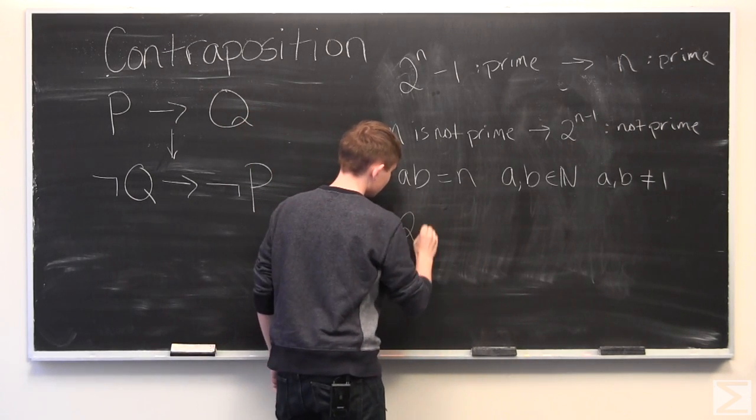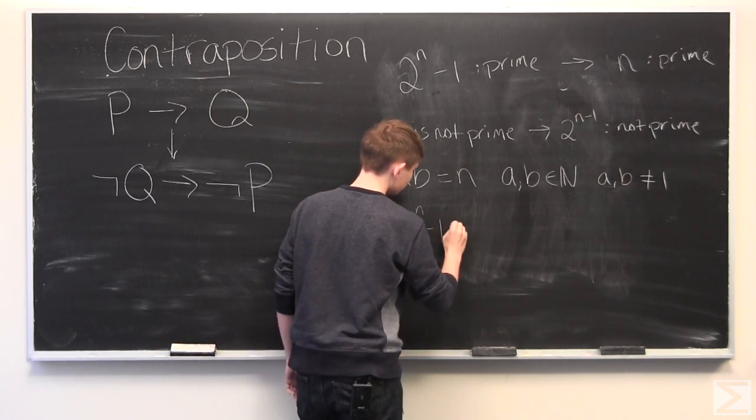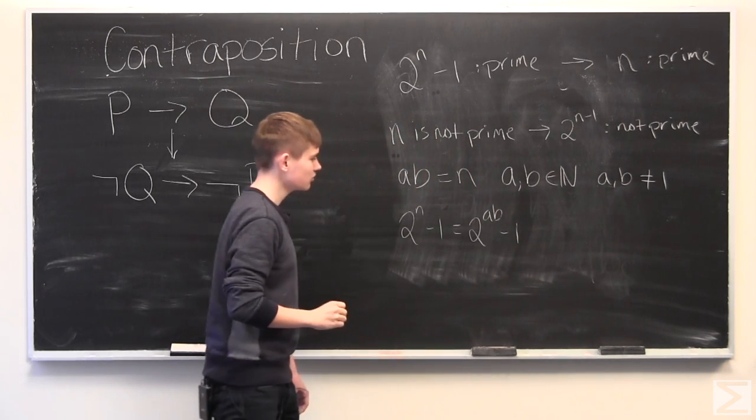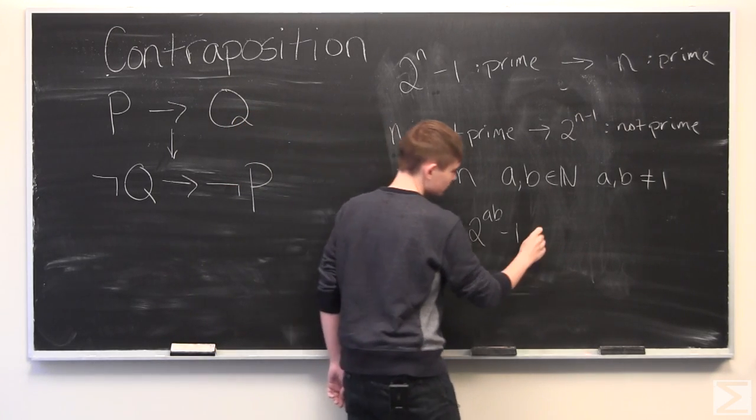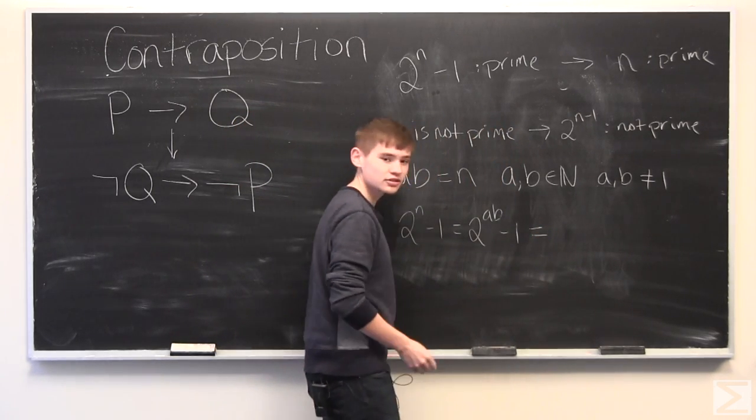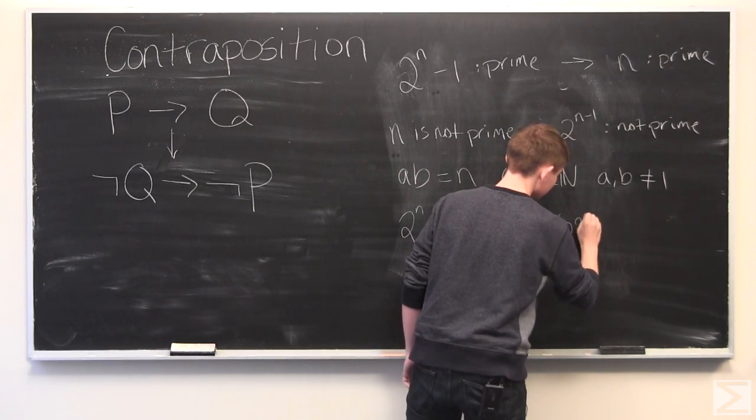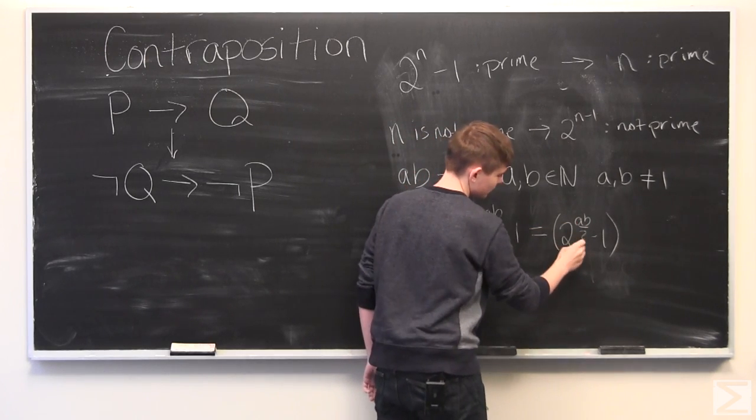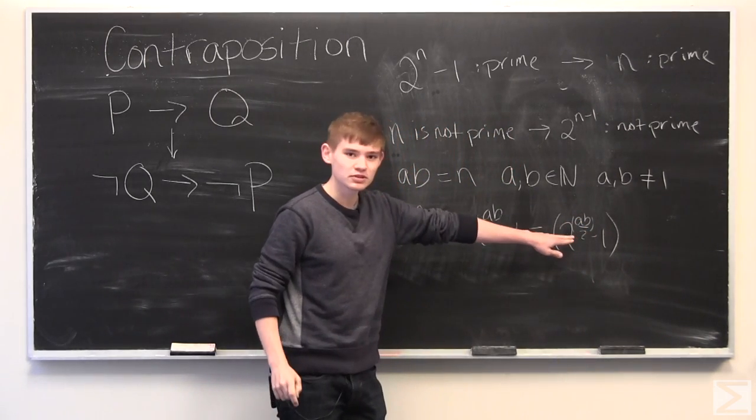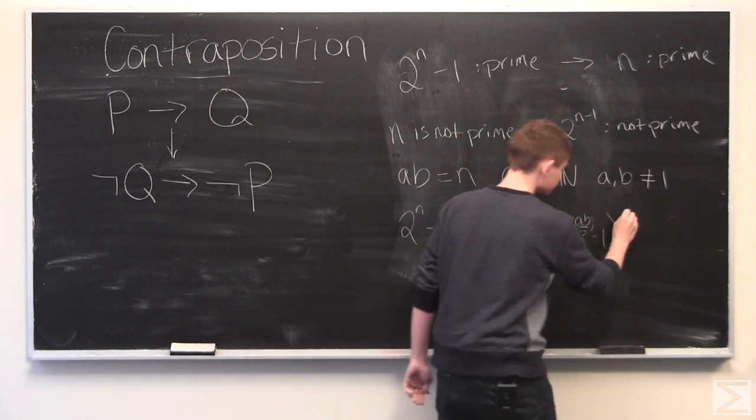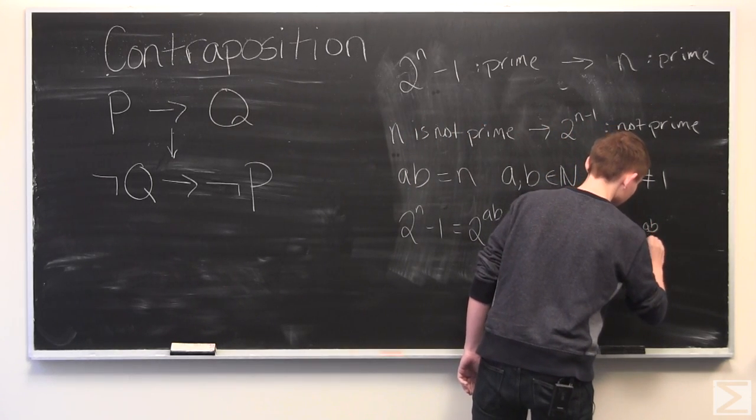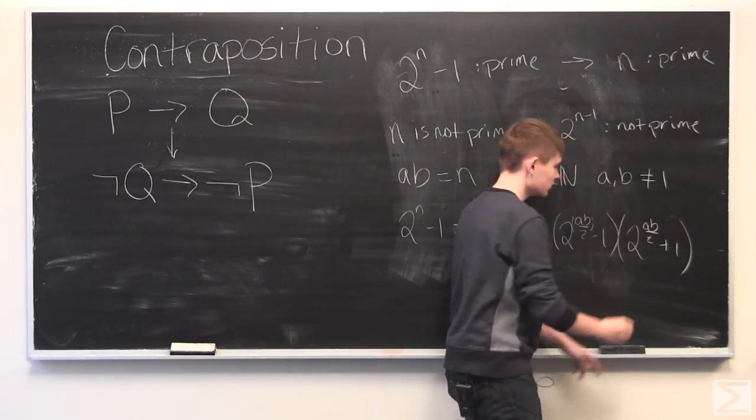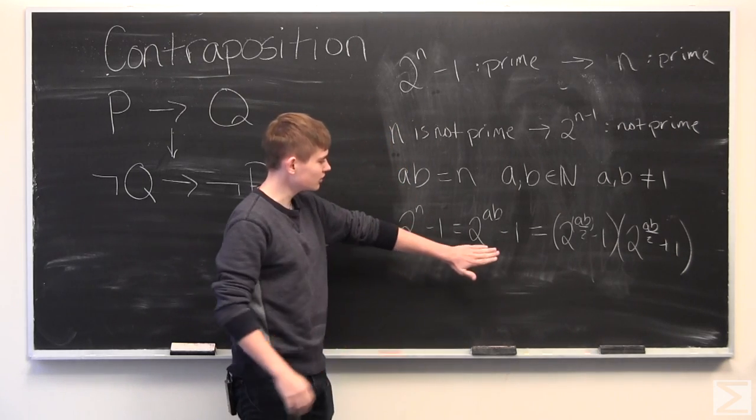So this means that 2 to the n minus 1 is equal to 2 to the A times B minus 1. And, if we have this, we can factor it into 2 to the A times B divided by 2 minus 1. If you multiply these out, you get this.